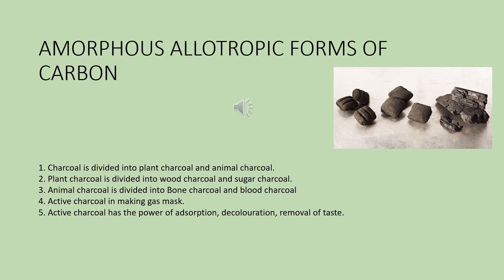The next type of plant charcoal is sugar charcoal. By destructive distillation of sugar, or by the addition of concentrated sulfuric acid to sugar, this charcoal is obtained. Sugar charcoal is the purest form of carbon.